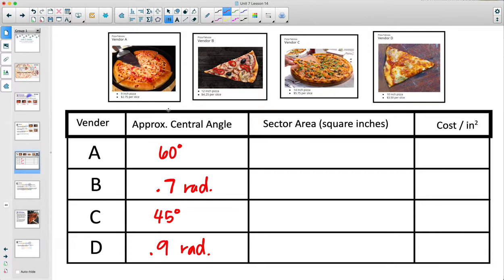So then calculating the actual area of those sectors to figure out how much pizza you're actually eating. And then this would require using the radius in each one. So if the diameter is 9, the radius is 4.5. Diameter is 12, radius is 6. Diameter is 14, so radius is 7. Diameter is 10, so radius is 5. And so calculating the area. So remember, area is going to be radius squared times π. So for each of these, so 4.5 squared times π, 6 squared times π, 7 squared times π, and 5 squared times π.